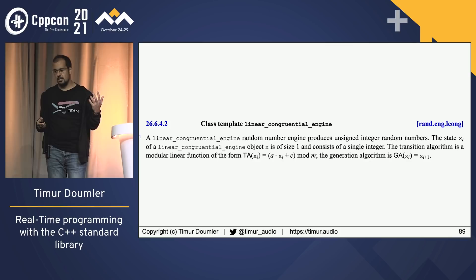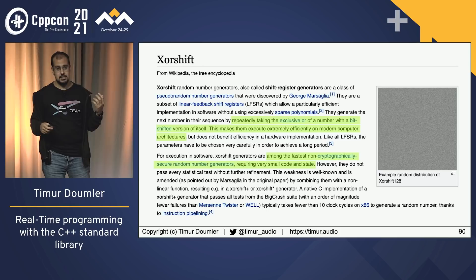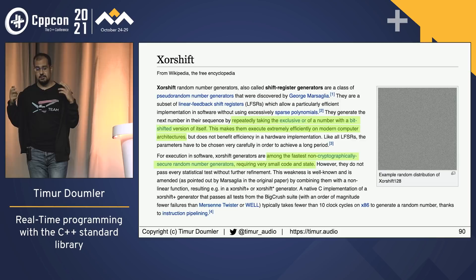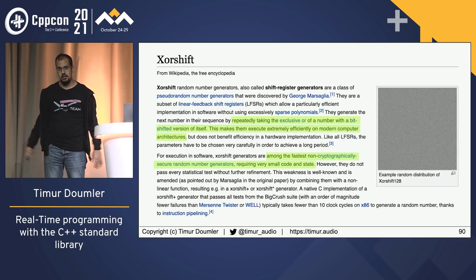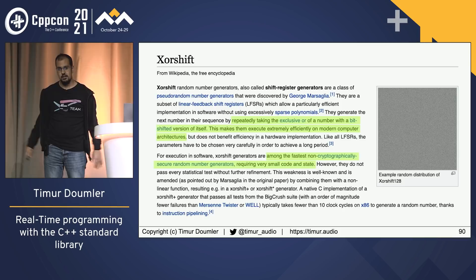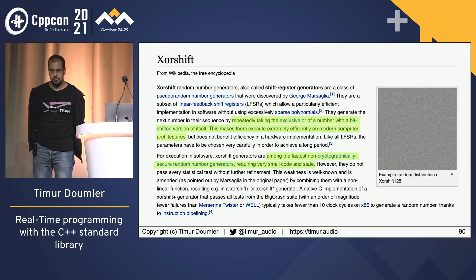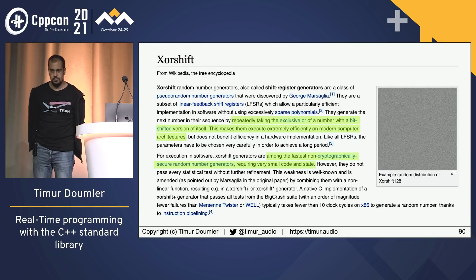The fastest random number engine for this kind of stuff appears to be xorshift. To generate a new random number it's basically just a bit-shift and an XOR operation — super, super fast, and can be vectorized on modern hardware. In my opinion this is probably the best random number generation engine for real-time stuff if you don't care about hardcore cryptographic security. It's not in the standard — maybe I should write a proposal — but there are third-party implementations available.